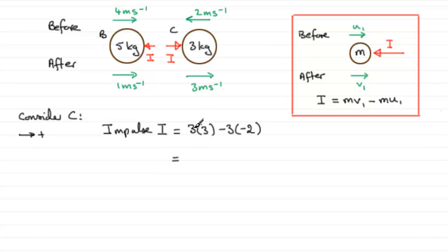So all we've got now to do is work this out. We've got 3 times 3 is 9. And minus 3 times minus 2 is plus 6. 9 and 6 is 15. Don't forget the units for impulse. The units are Newton seconds when you've got mass in kilogram and a velocity in meters per second. So 15 Newton seconds.